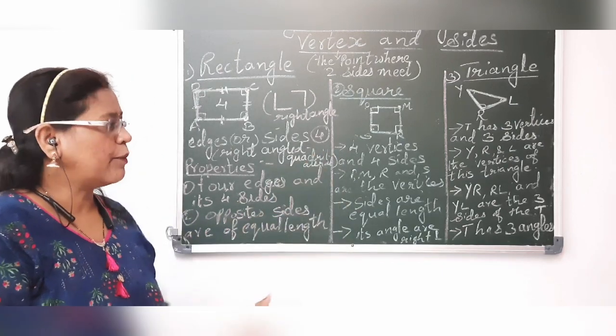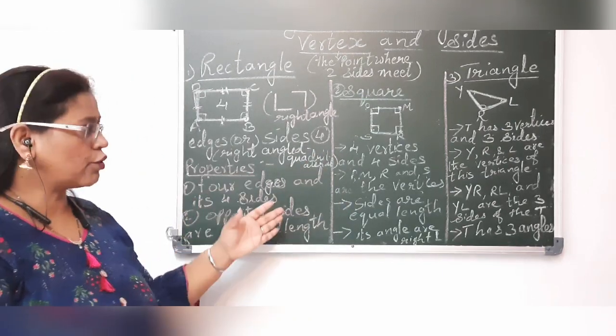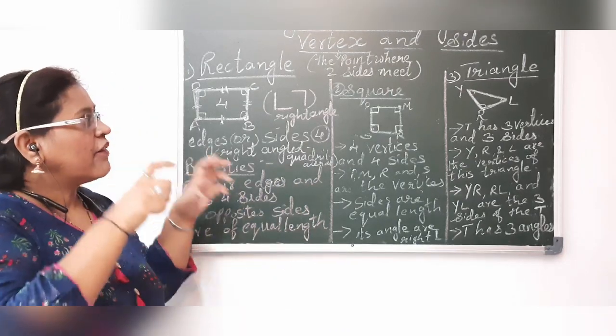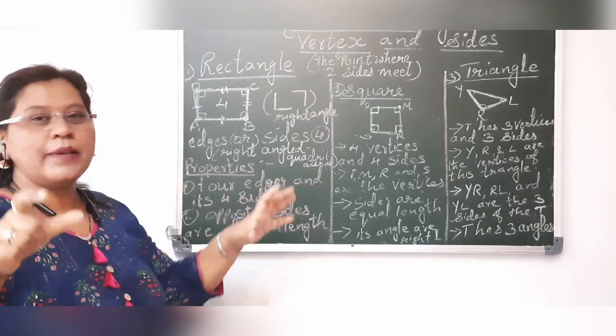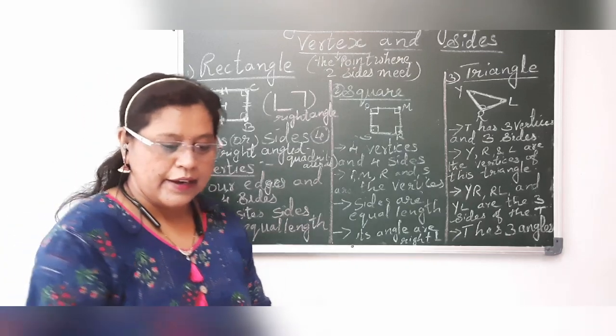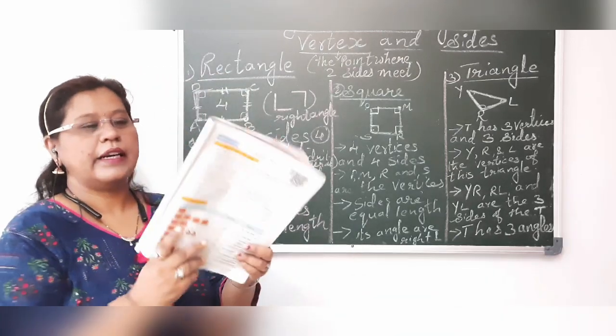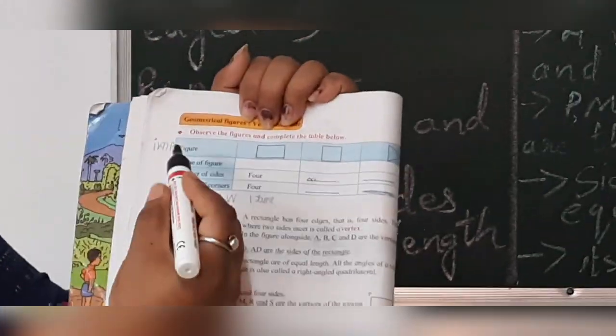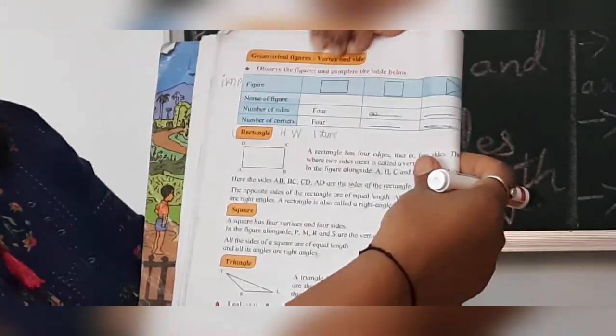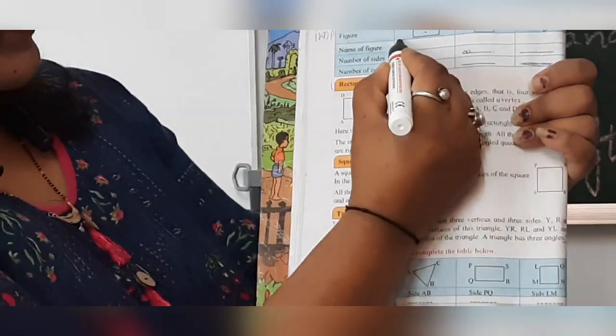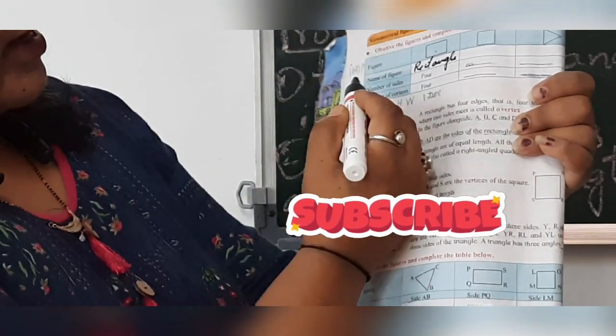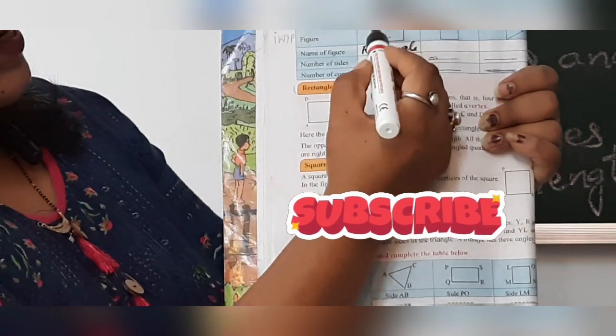Just if you see the picture, all the properties I had written. So you can go through it and your concept of the figures, its sides will be crystal clear for you. Now, we will go through with your textbook. Page number six. First one you can see. Figure. Now, which is this figure?